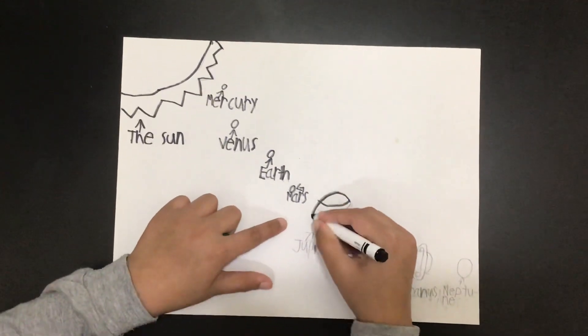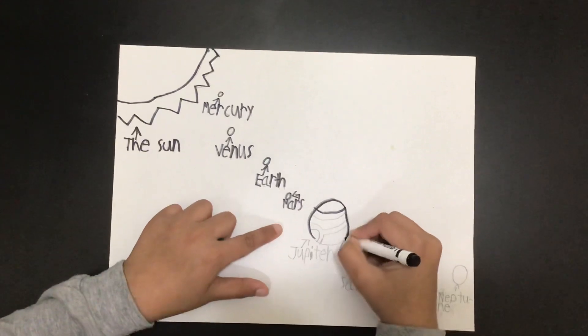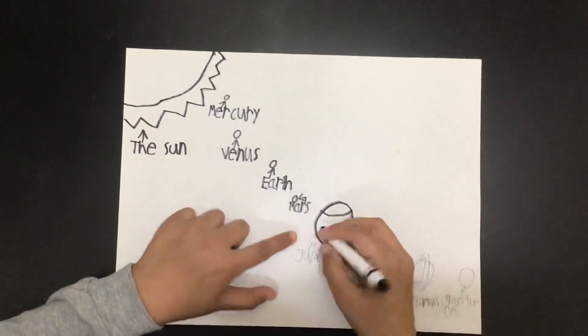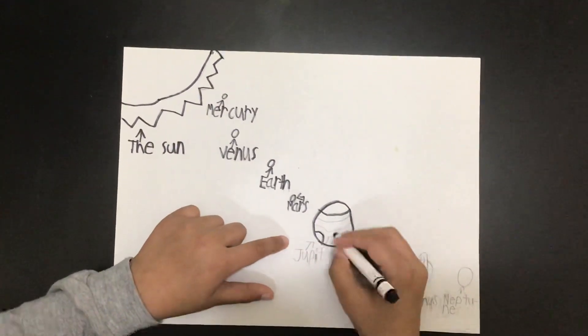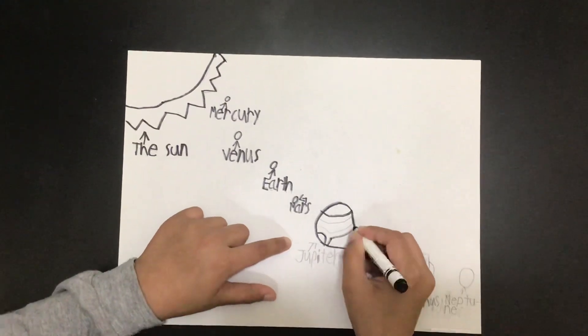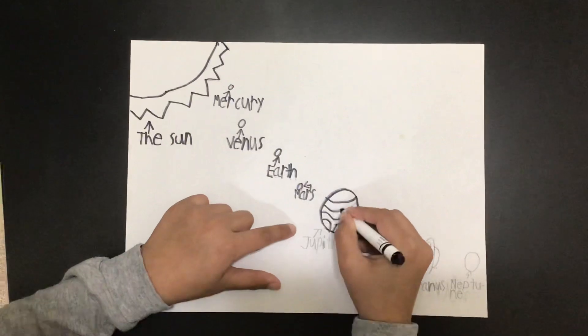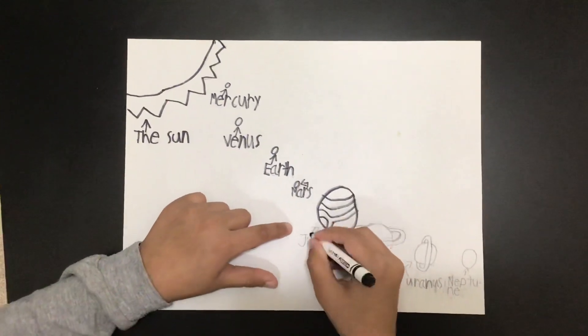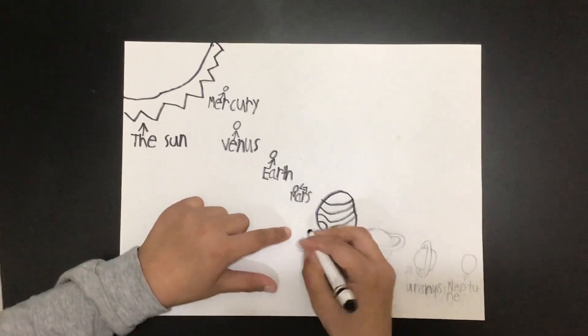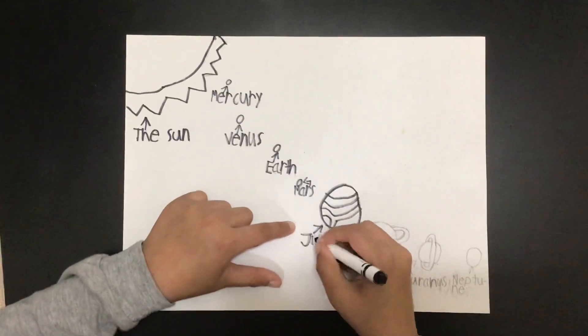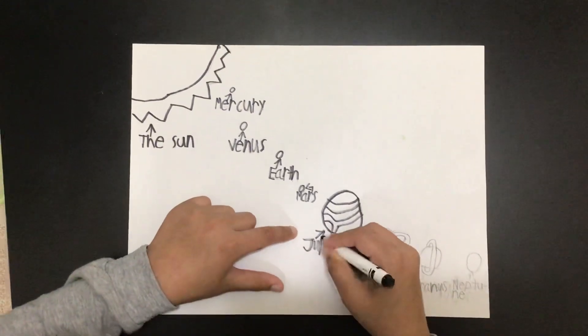This is Jupiter. It is the biggest planet in the solar system. It has a big red spot, and the big red spot is four times bigger than Earth.